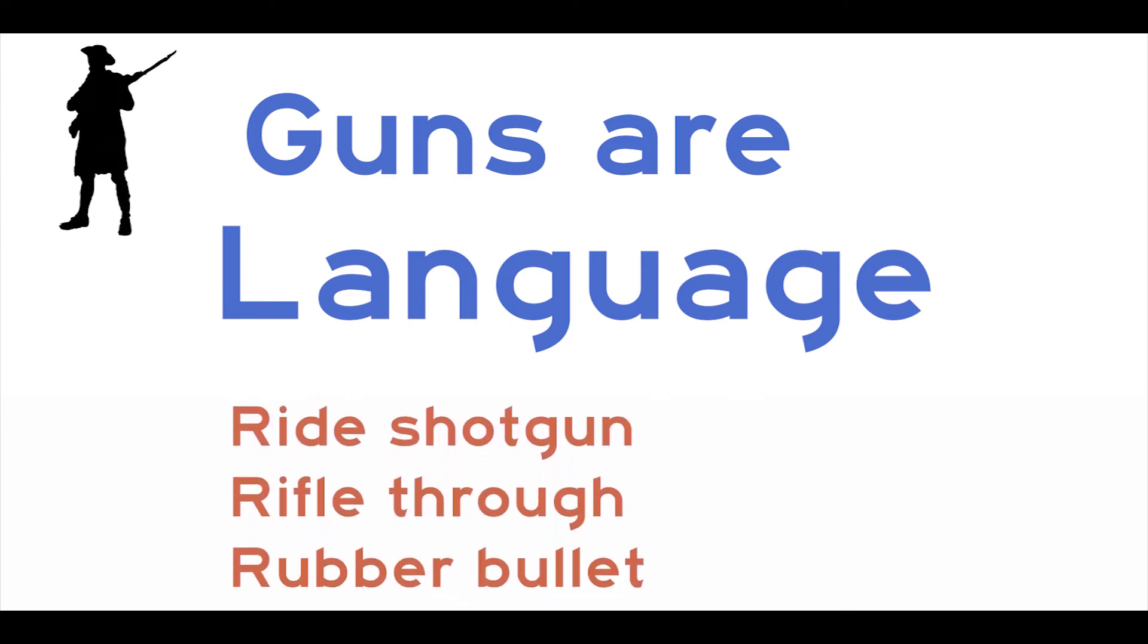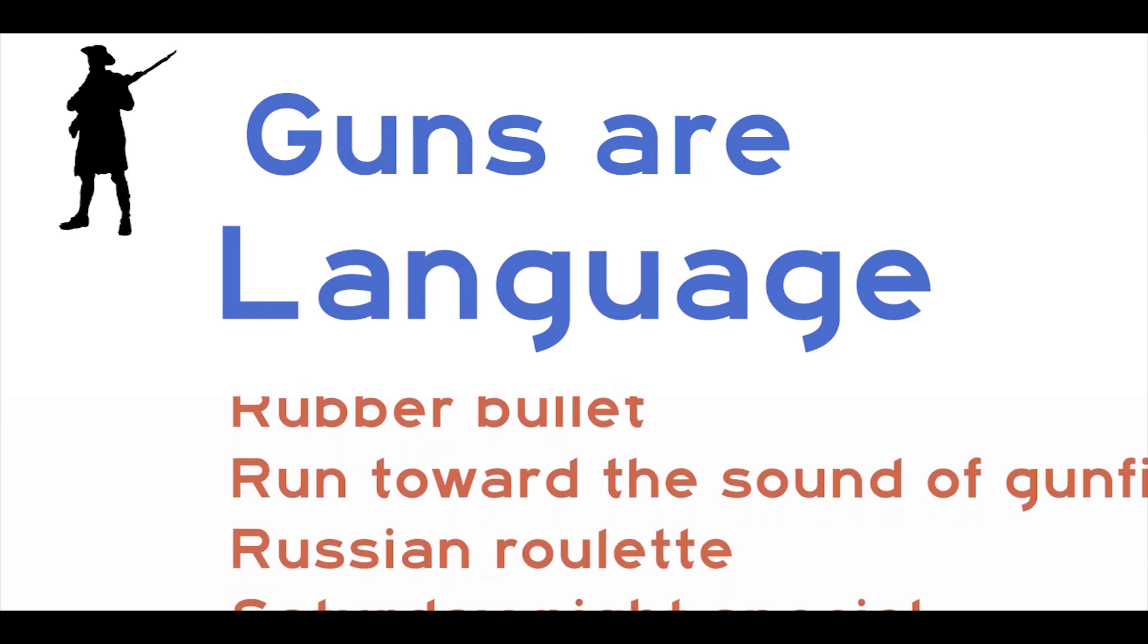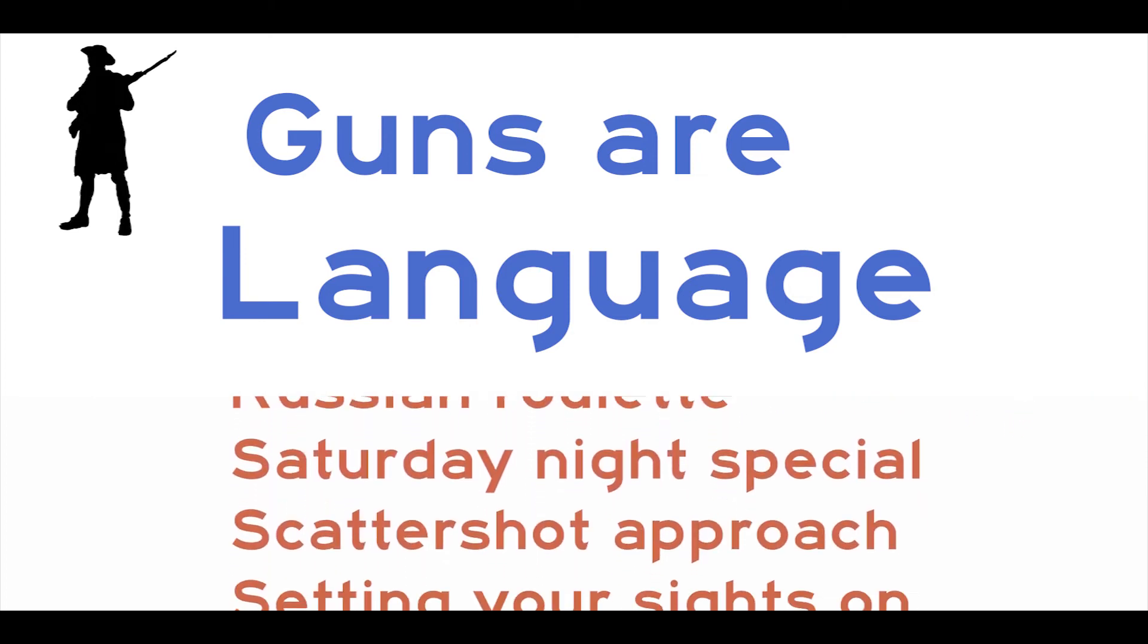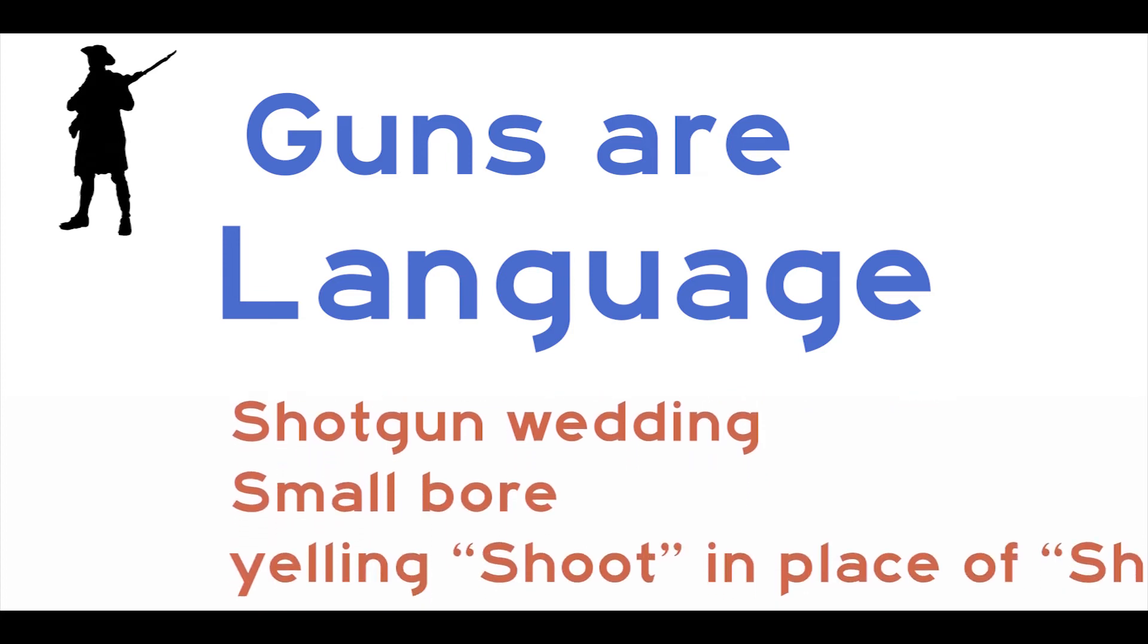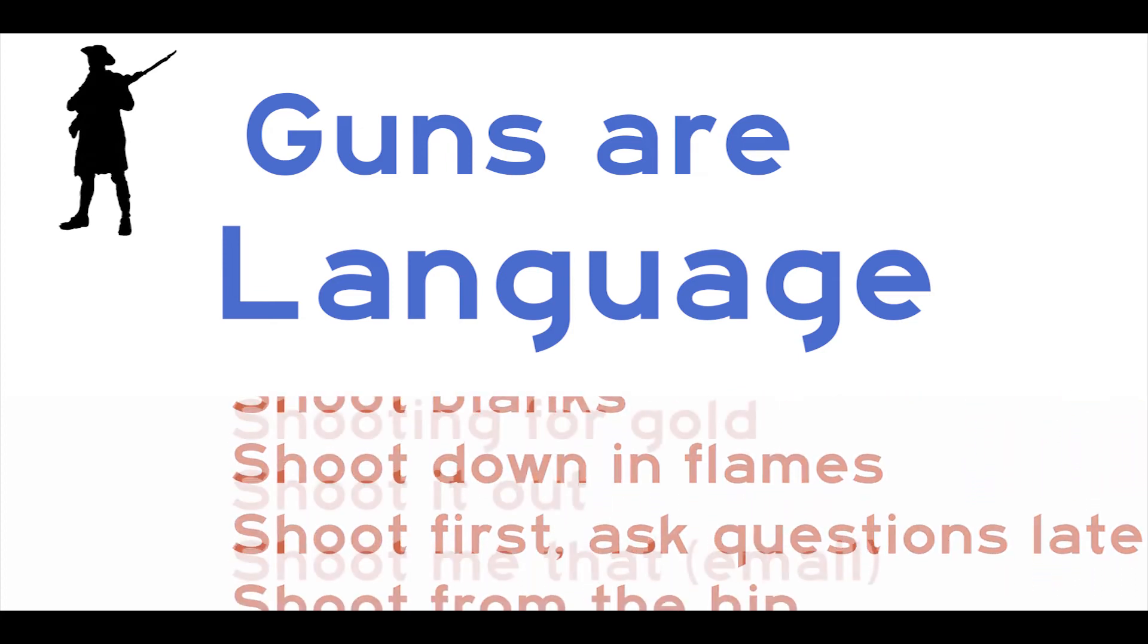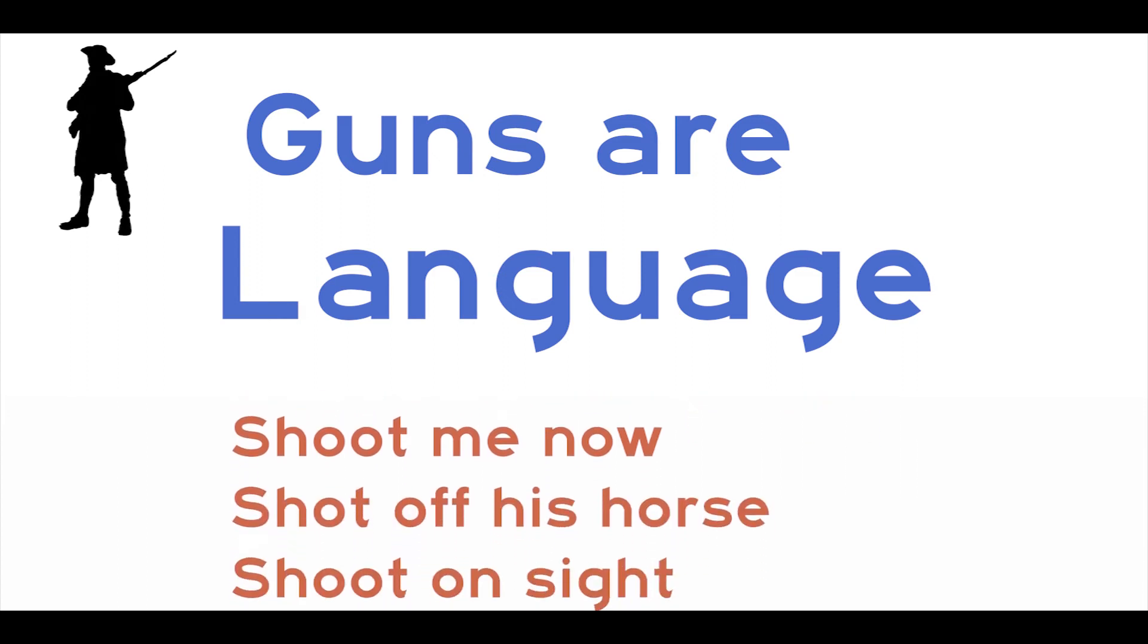For example, I think a good example is a gun prohibitionist article was talking about an assault weapons ban and they were concerned about using the word ban, completely oblivious to the assault weapon part of it, you know, words created by Nazis.